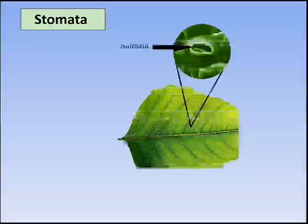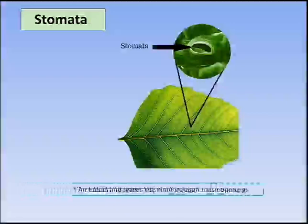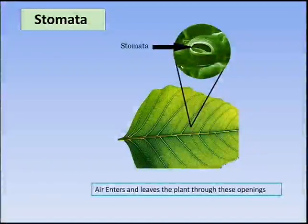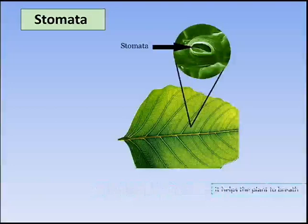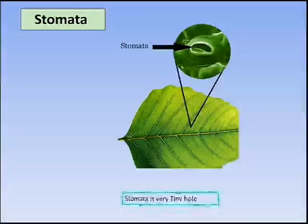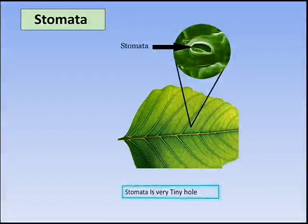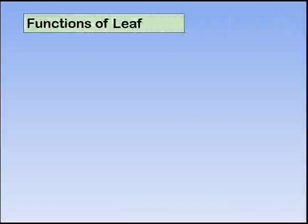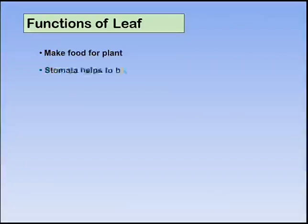Air can enter and leave the plant through these stomata openings. It helps the plant to breathe. Stomata are very tiny holes. Now, what are the functions of a leaf? The leaf makes food for the plant, and stomata help the plant to breathe. The leaf also stores food.